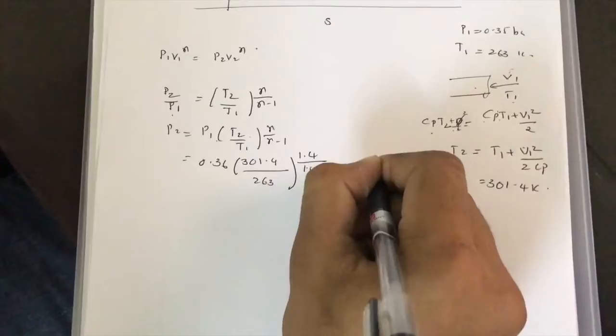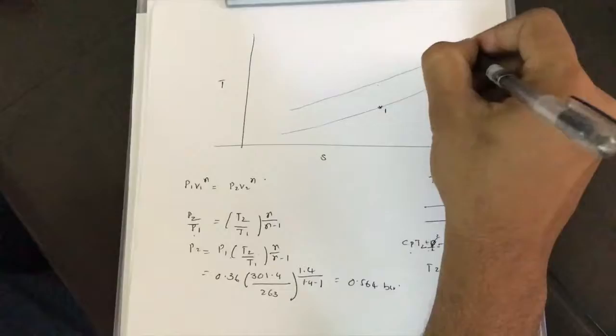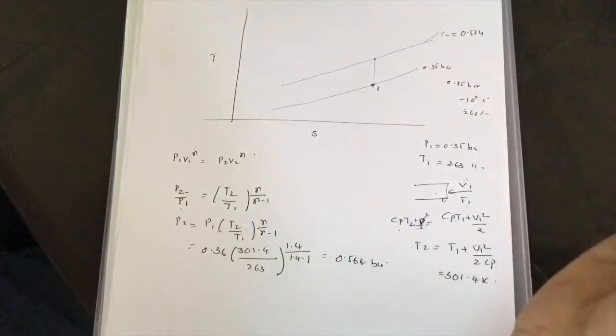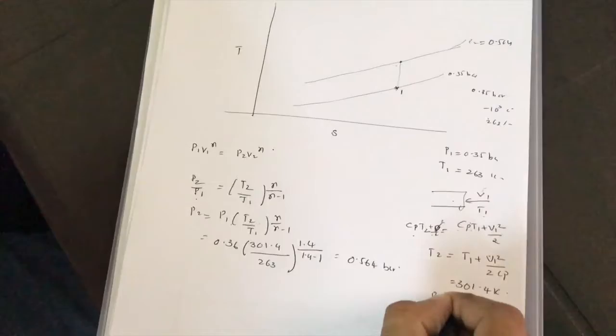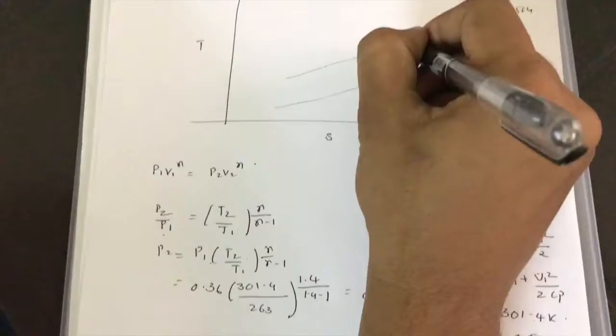Substituting all values gives P2 = 0.564 bar. So we have obtained P2 = 0.564 bar and T2 = 301.4 K.